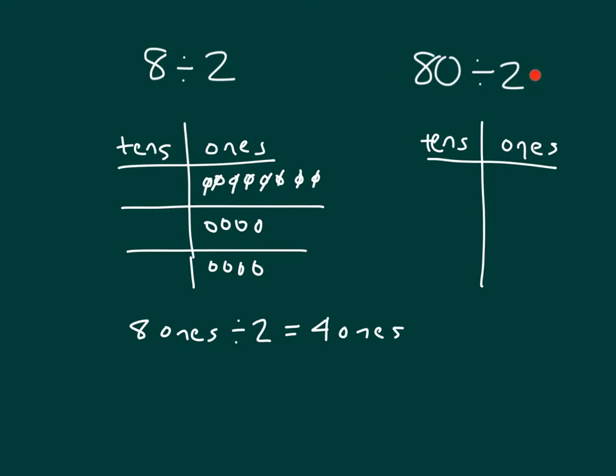Now over here, when we're looking at 80 divided by 2, we'd model the 8 tens first. After modeling the 8 tens, how many groups would we have? Right. And in much the same way, there's 4 here, and there's 4 here. So we'll go 1, 2, 3, 4, and 1, 2, 3, 4.